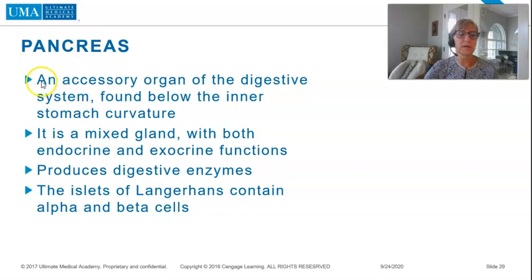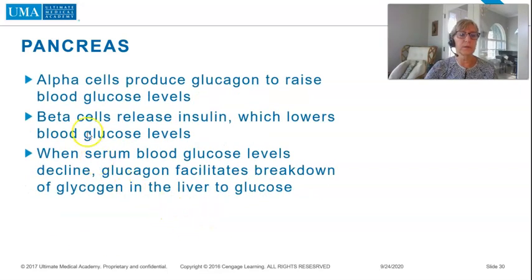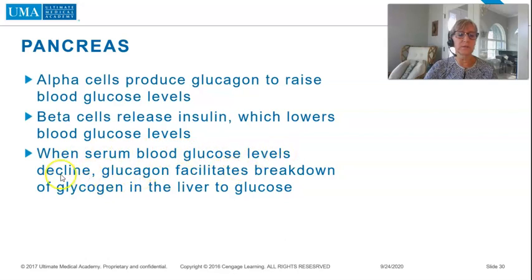The pancreas is an accessory organ of the digestive system found below the inner stomach curvature. It is a mixed gland with both endocrine and exocrine functions, producing digestive enzymes. The islets of Langerhans contain alpha and beta cells. The alpha cells produce glucagon to raise blood glucose levels; beta cells release insulin, which lowers blood glucose levels. When serum blood glucose levels decline, glucagon facilitates breakdown of glycogen in the liver to glucose.